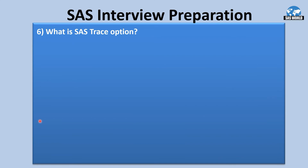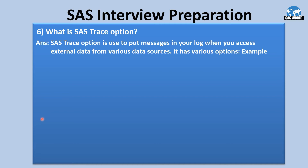The next question is: What is the SAS trace option? The SAS trace option is used to put messages in your log when you access external data from various data sources. When we connect to external Teradata and use the access engine, you can see what information is sent to the database and how SAS statements are converted into external-database-understandable SQL queries by using the SAS trace option. This is closely related to implicit and explicit pass-through — that's why I included it here. This is an advanced topic.